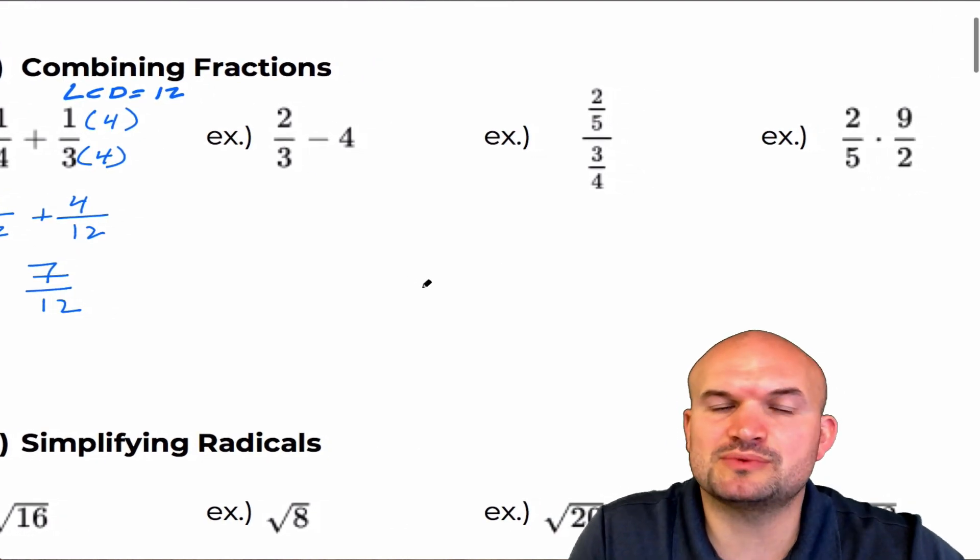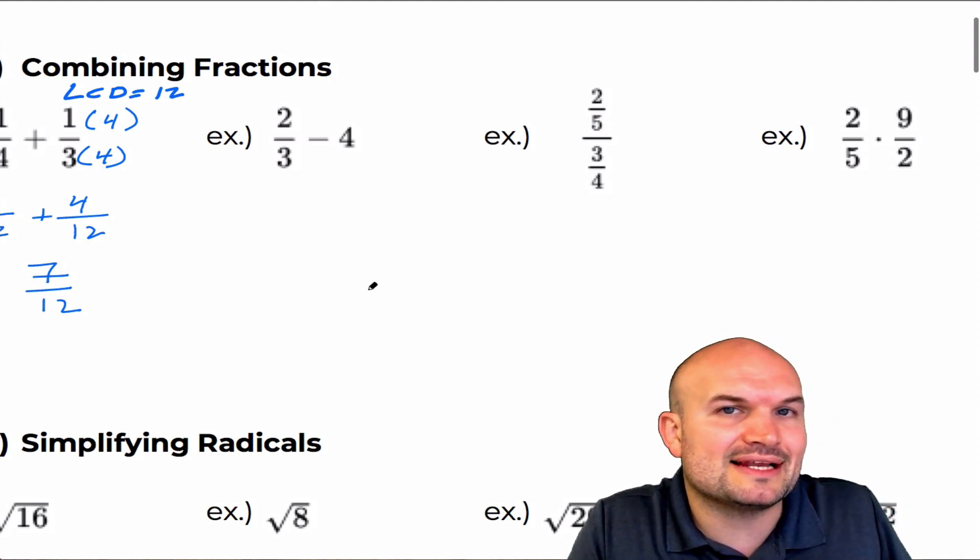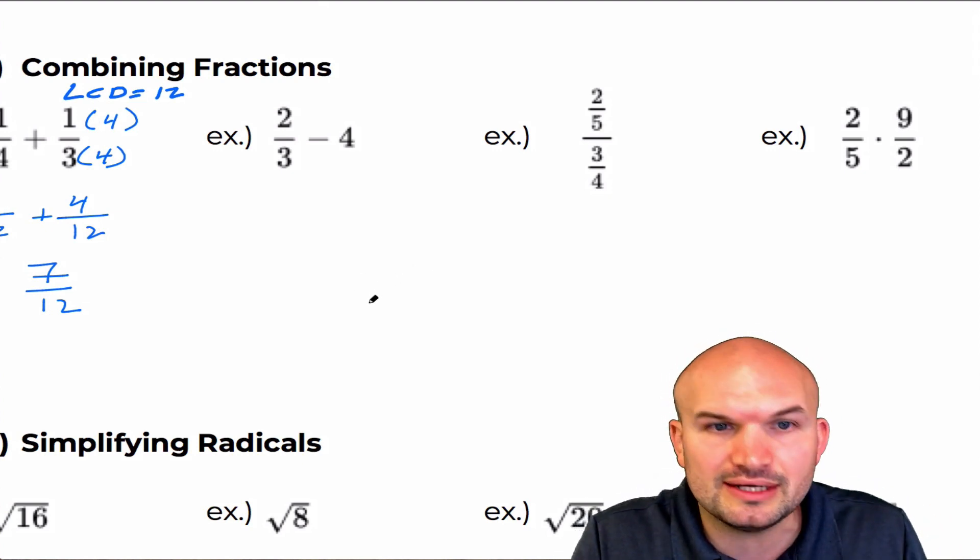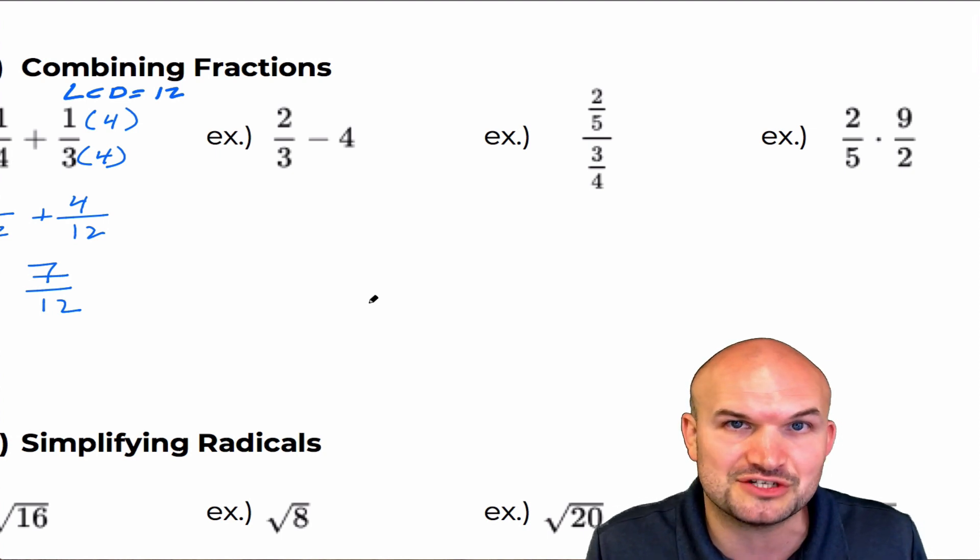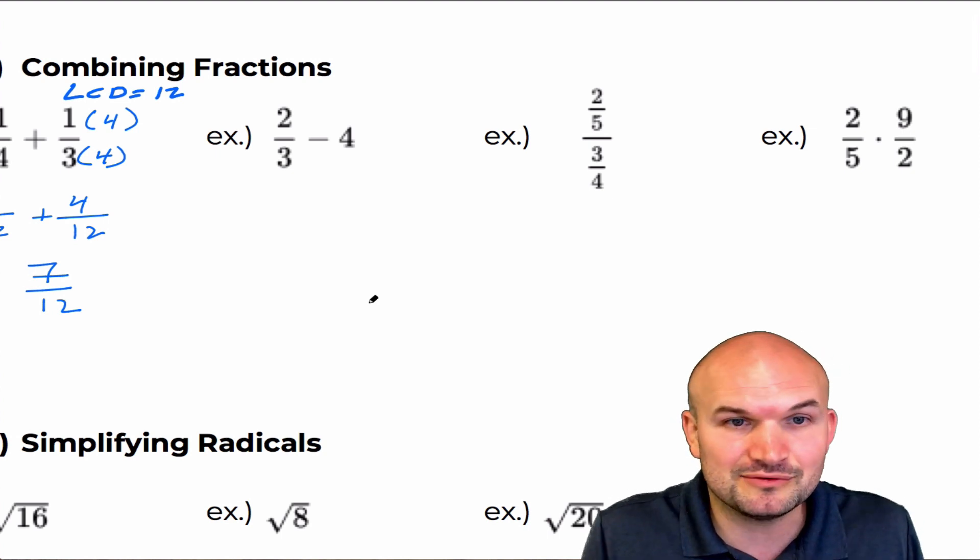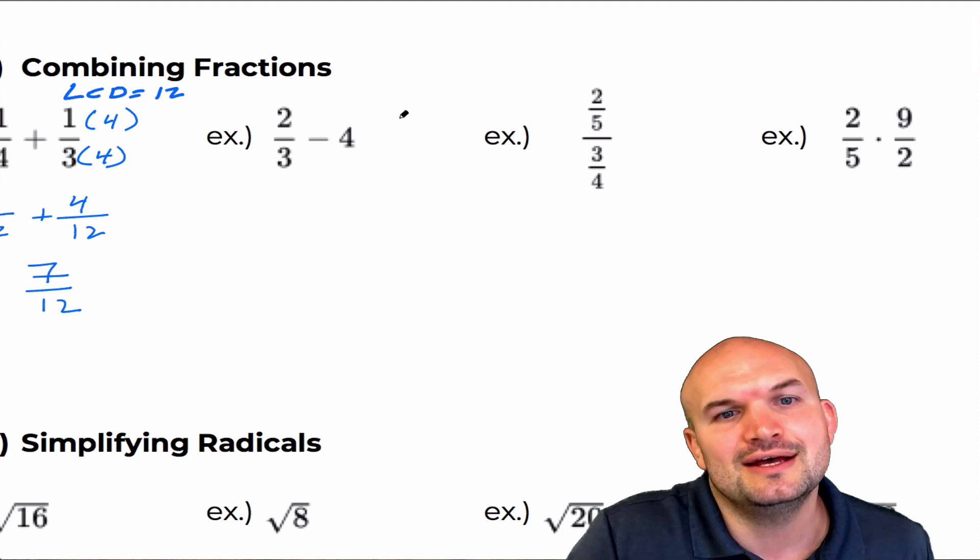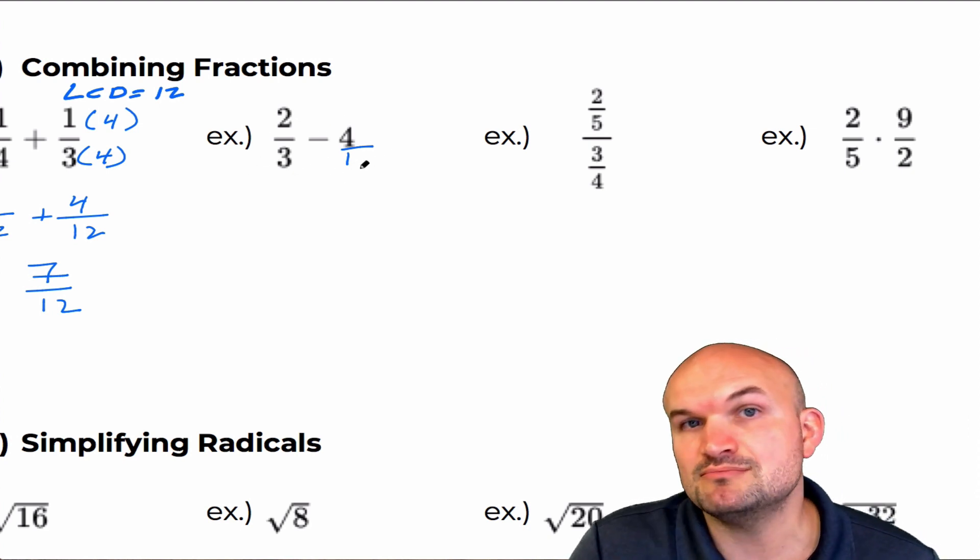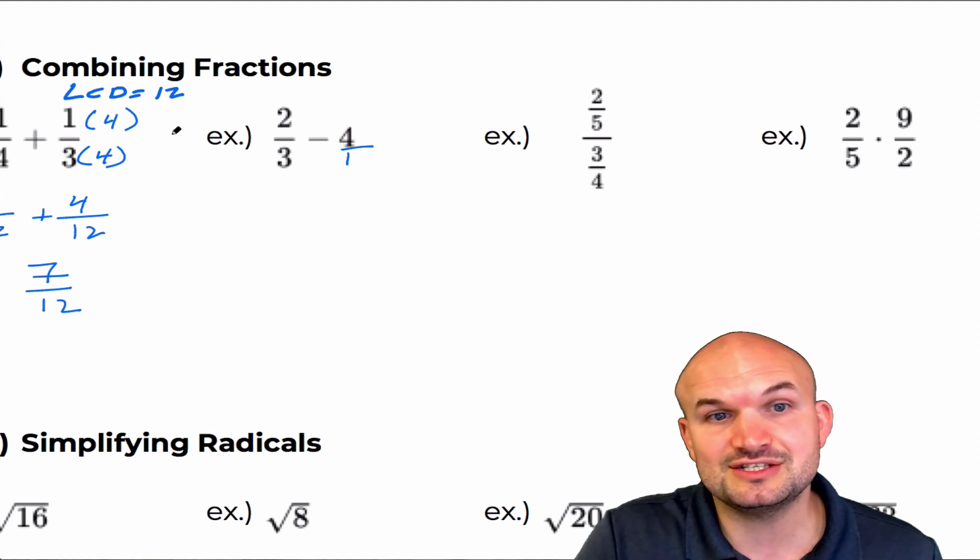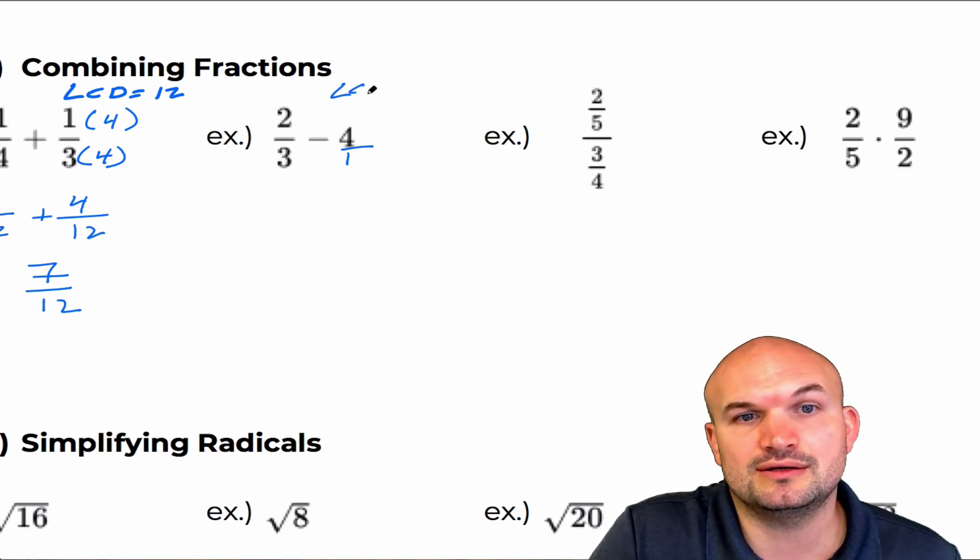Now the next one usually gets confused with a lot of students because we're having a fraction minus a whole number. And it's like, what do we do here? Well, again, if we're combining fractions, we want the fractions to both have common denominators. So what we're going to do is we're going to change our whole number to a fraction just by putting it over one. So now what we're looking for is what is the LCD of three and one? Well, the smallest multiple that three and one both divide into in this case is just going to be, the LCD here is three.